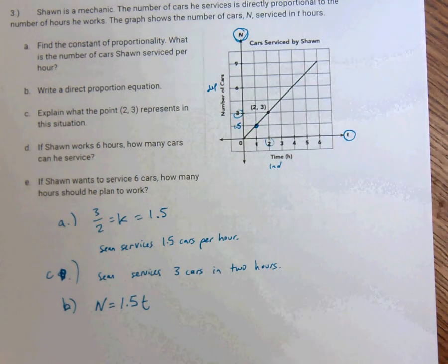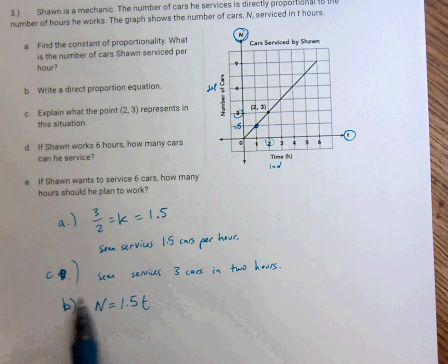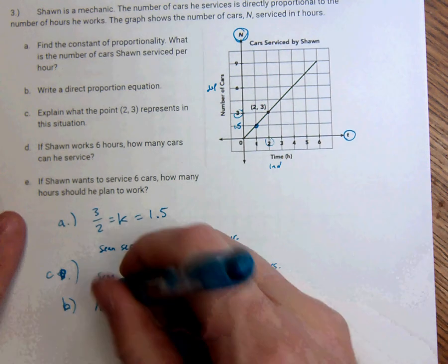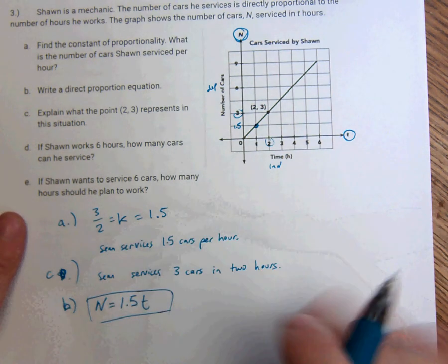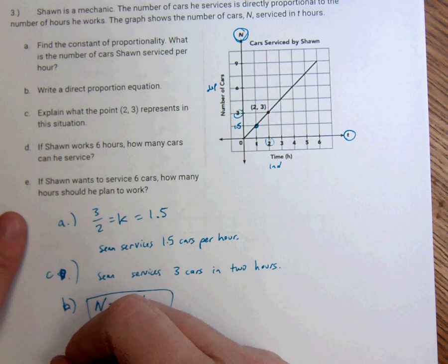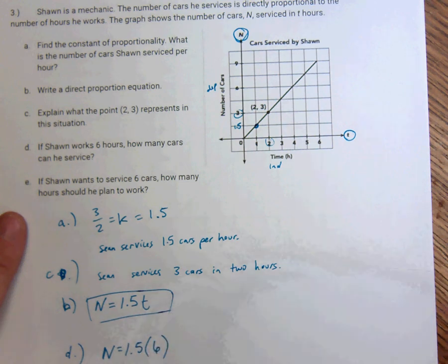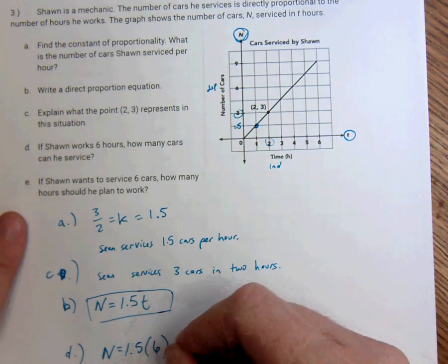So, yeah, it's 1.5. If Sean works six hours, how many cars can he service? So, I'm going to use the equation. I'm going to say, so, D, if he works six hours, N is equal to 1.5 times six. How many can he service?